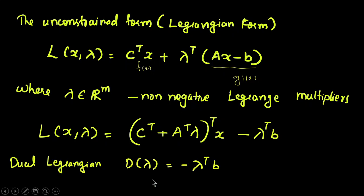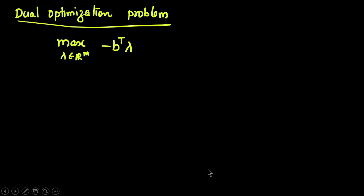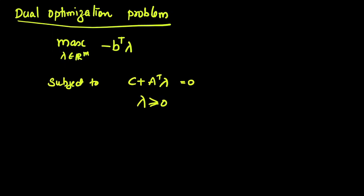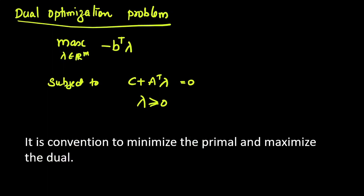The dual Lagrangian is represented as d(λ) = −λ^T b, and the dual optimization problem is: maximize over λ in R^M, −b^T λ, subject to c + A^T λ = 0 and λ ≥ 0. It is the convention to minimize the primal and maximize the dual problems.